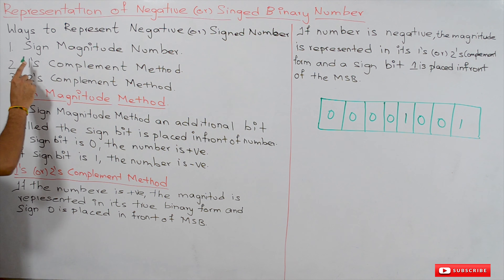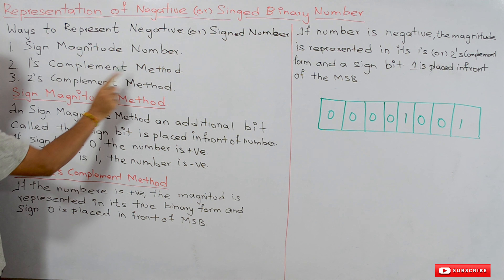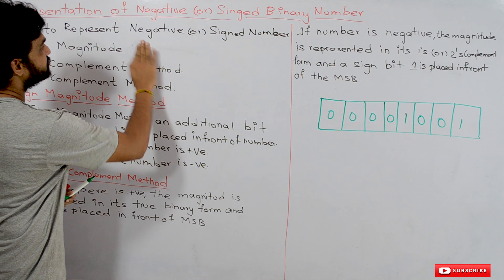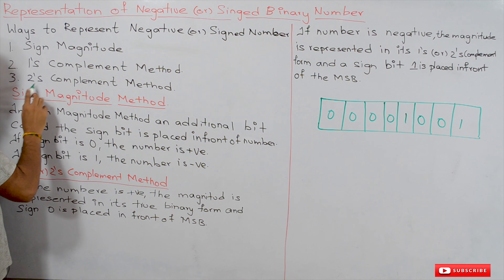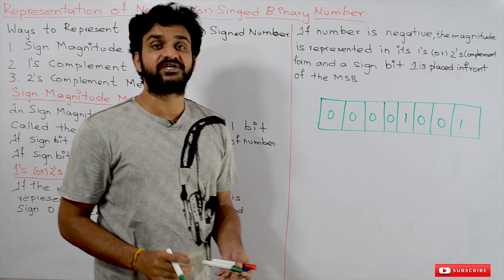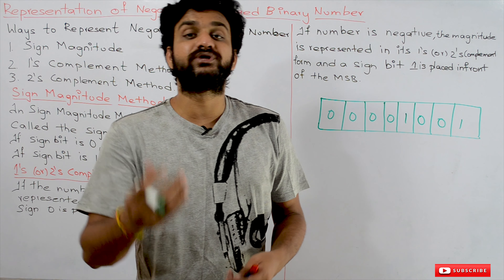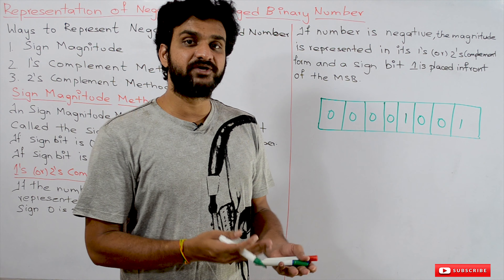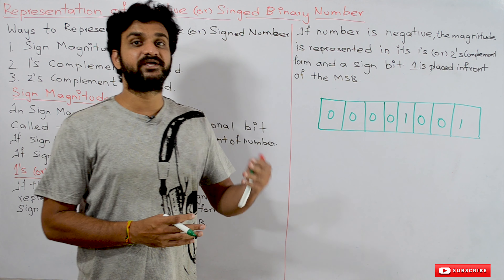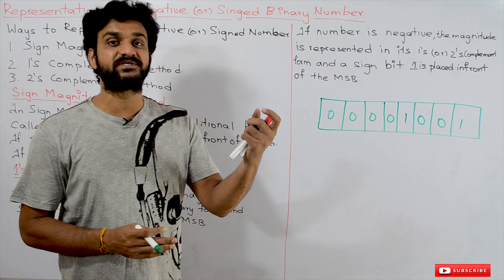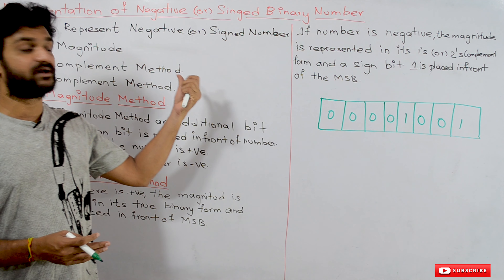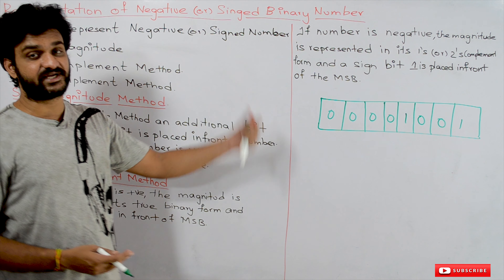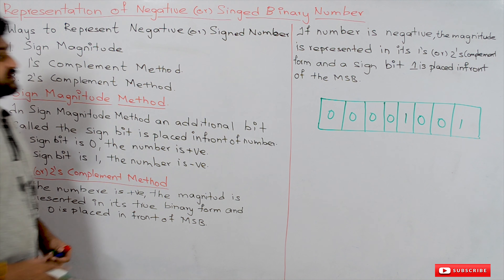There are three different ways to represent negative numbers, or signed numbers: the sign-magnitude method, one's complement method, and two's complement method. The computer may use any one of these three methods to represent negative numbers. Most computers in modern days use the two's complement method to represent negative numbers.